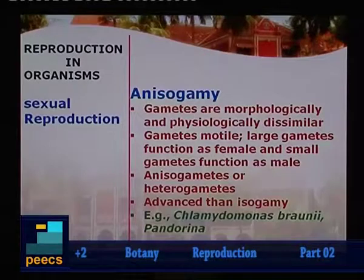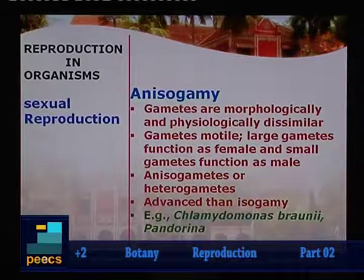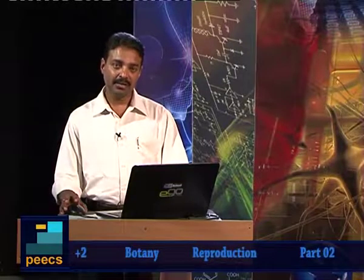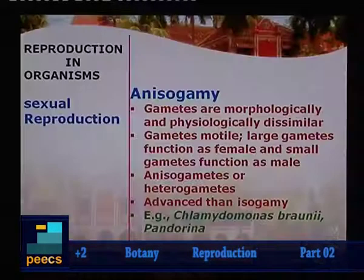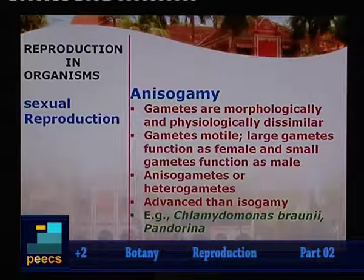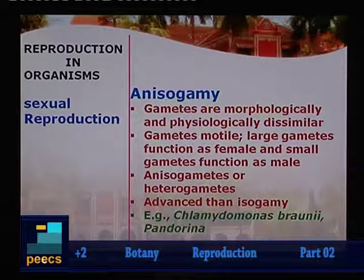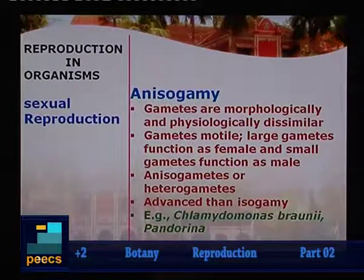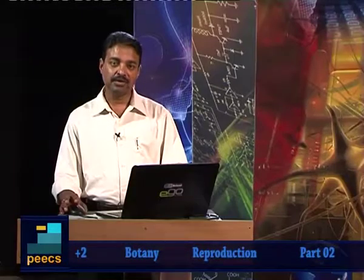The second method is anisogamy. Aniso means dissimilar, so the fusing gametes are dissimilar either morphologically or physiologically. Anisogamy is categorized into morphological anisogamy or physiological anisogamy. Gametes are motile; large gametes function as female and small gametes function as males. The gametes are called heterogametes or anisogametes. Examples: Chlamydomonas braunii and Pandorina. This method is more advanced than the primitive isogamy method.